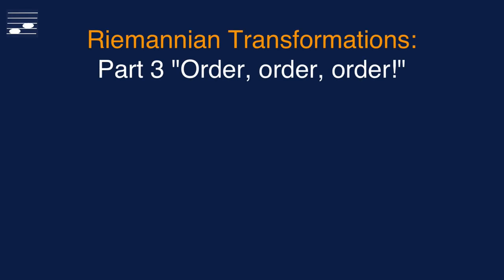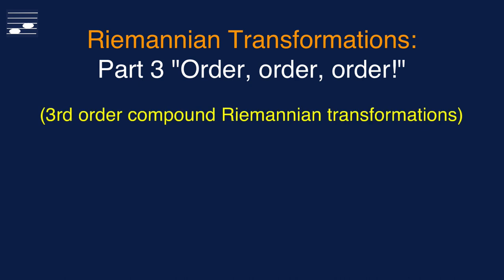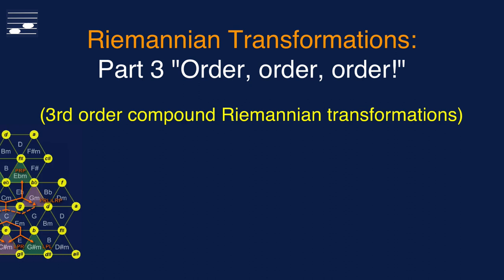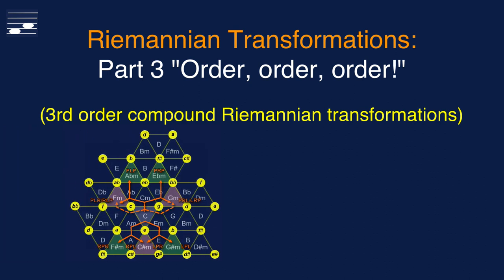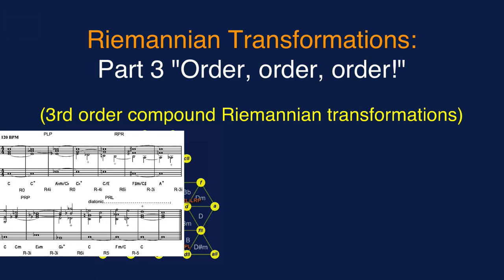Hello, in this tutorial series on Neo-Riemannian theory, this episode is about third-order compound Riemannian transformations. In the triad-Tonetz diagram, these correspond to a path with three moves. We'll study the six possible transformations in major and minor, and evaluate the Schillinger root cycle patterns and the equivalence between major and minor key transformations.